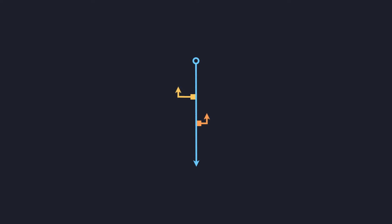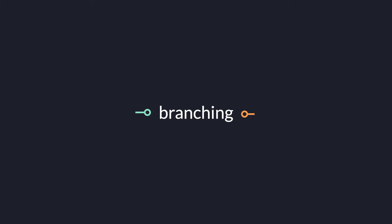The topic for this one is branchless programming. Let's begin by understanding what branching is. It is when your program can take different execution paths, meaning there will be some part of your code that will not be executed. One of the common ways of introducing a branch in your code is using an if.